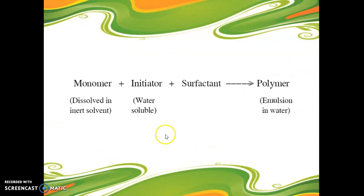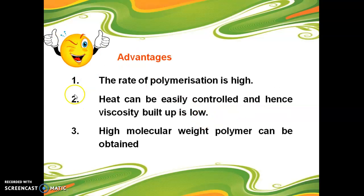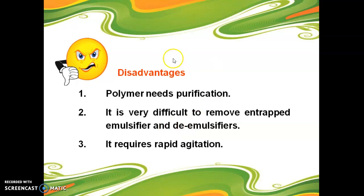This is the simple schematic diagram for the preparation of emulsion polymer. The advantages are: the rate of polymerization is very high, heat can be easily controlled, and hence viscosity buildup is low. Here we can prepare high molecular weight polymers. The disadvantages are that the polymer needs purification, it is very difficult to remove entrapped emulsifier and de-emulsifiers, and the process requires rapid agitation.